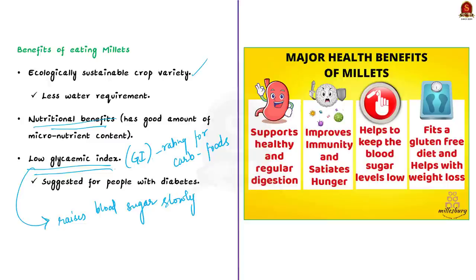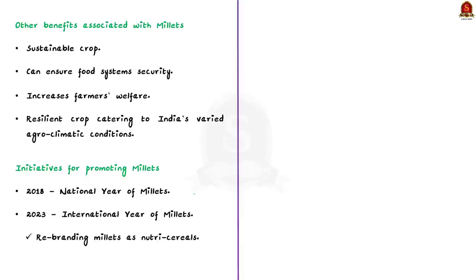Since millets have a low glycemic index, they raise our blood sugar slowly and gradually instead of in quick spikes. That is why millets are generally suggested for people with diabetes. India is often dubbed the diabetes capital because of the huge number of diabetes patients in our country, and therefore the promotion of millets through this program is a much-needed one. Due to these health-related benefits, millets are often referred to as superfood — a nutrient-rich food especially beneficial for health and well-being. Millets are also promoted because they have huge potential to increase farmers' income and ensure food and nutritional security, being resilient to India's varied agroclimatic conditions.